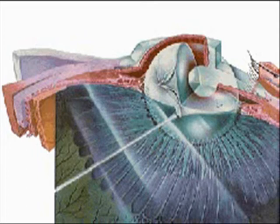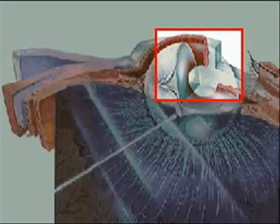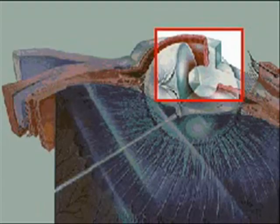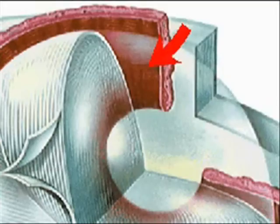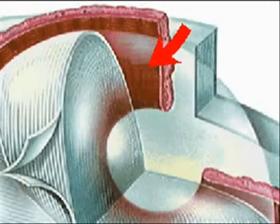The eye is divided into two segments by the lens and ciliary body. The front segment contains the fluid aqueous humor, and is in turn divided by the iris into anterior and posterior chambers, which are connected through the pupil's aperture. The back segment, called the vitreous body, contains a jelly-like substance known as the vitreous humor, and is lined by the light-sensitive retina.